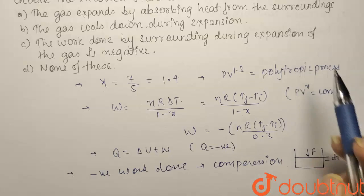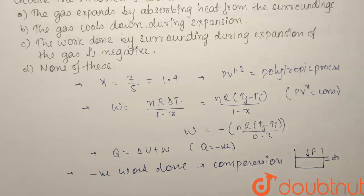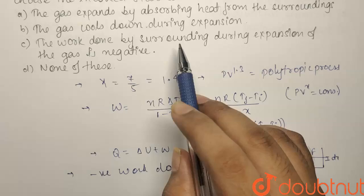Now, we have been asked for expansion. So, if there is expansion, it will be vice versa. That is the work done is going to be negative because in compression it is positive. So, our option C is also correct statement.